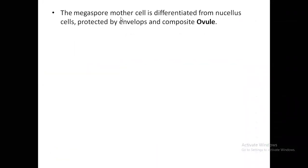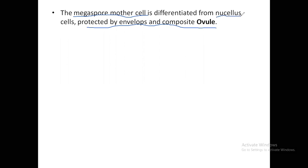The megaspore contains a cell called the megaspore mother cell, which differentiates into nucellus tissue, protected by envelopes, forming composite ovules. The megaspore mother cell is the part from which the female gamete actually develops. A mass of cells is called the nucellus cell. The nucellus is also present in the angiosperms, which is another similarity with them. It will develop a protective envelope above it and will have an ovule.